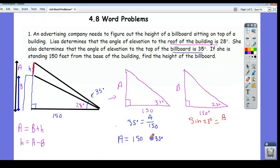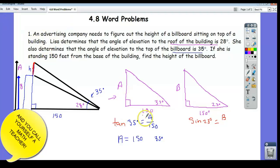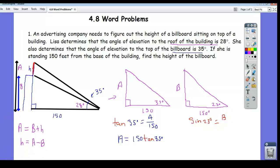somebody out there should have stopped me. I just used the wrong trig function. Tangent, right? Tangent of 35 is a over 150. Right, because the tangent of 35 is opposite over adjacent. Sorry about that. And same with over here. Tangent of 23.